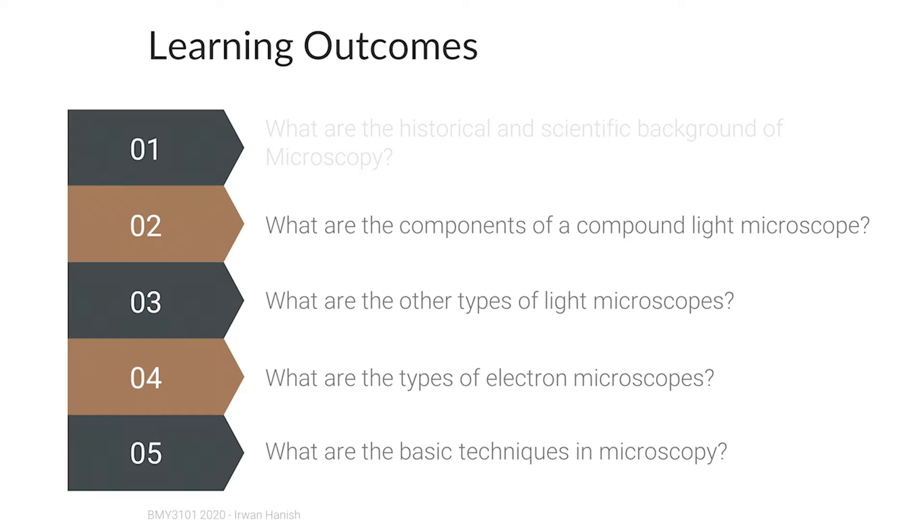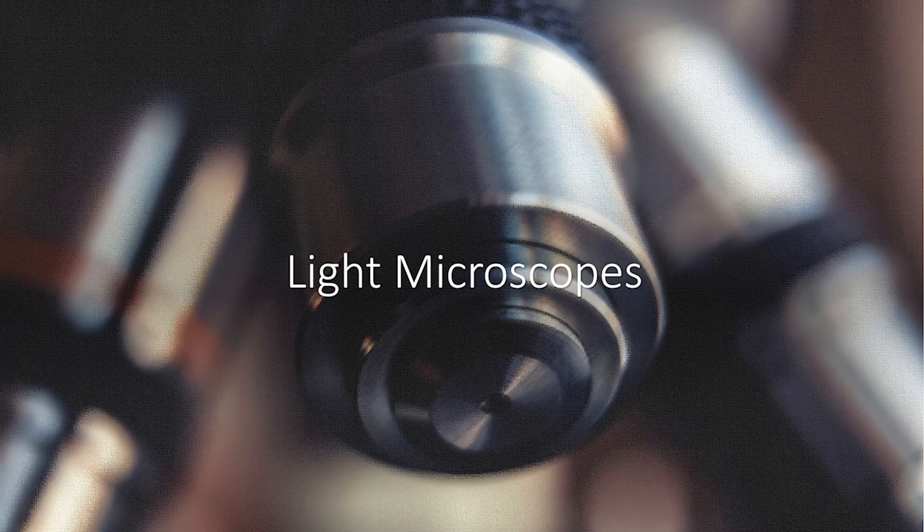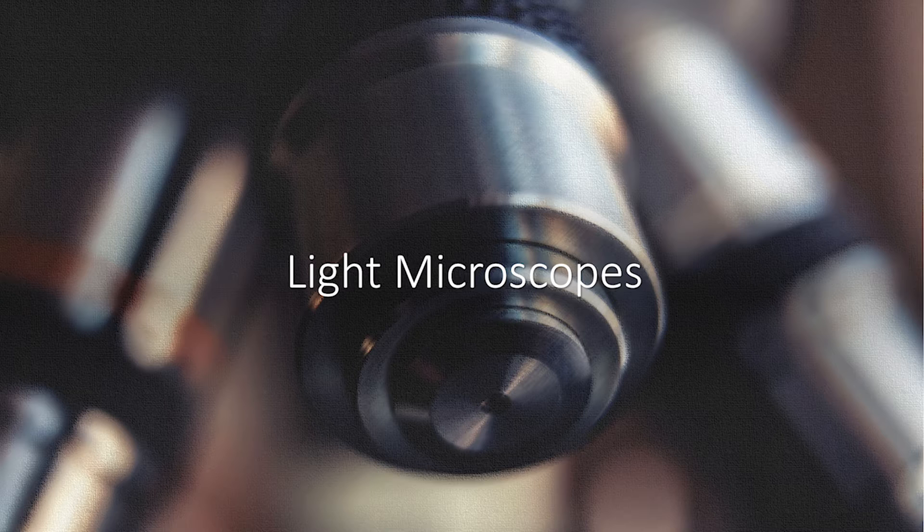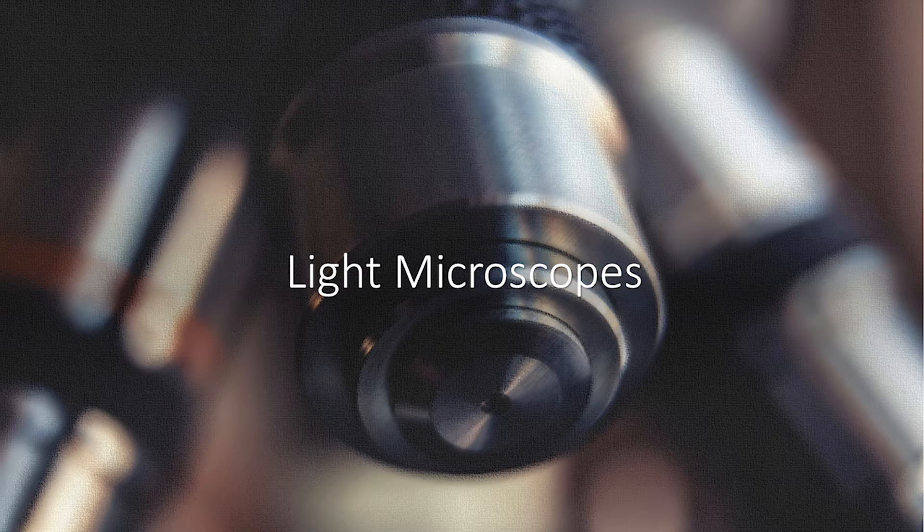In part one, we looked at key historical figures in microscopy and some basic optical principles that scientists use to invent microscopes. In this episode, we're going to talk about the general types of those inventions.